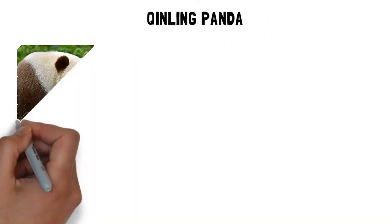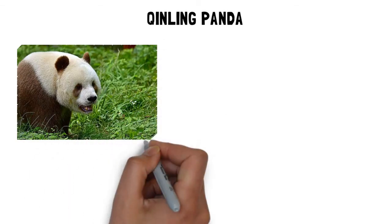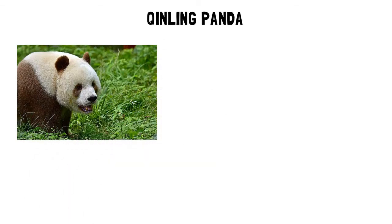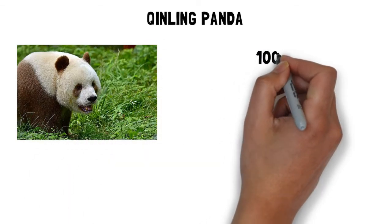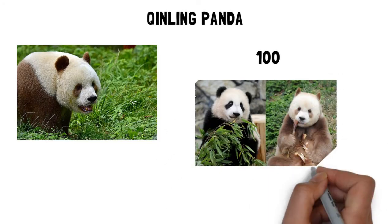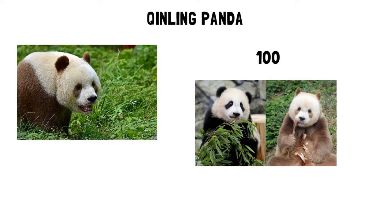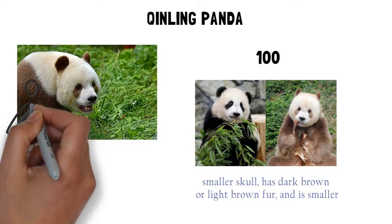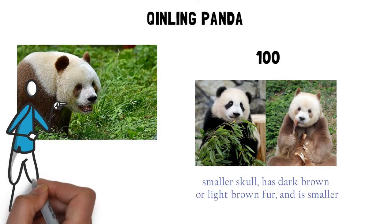Qinling panda. The Qinling panda, or brown panda, is endangered. In fact, there are only around 100 Qinling pandas still living in the wild. The Qinling is a relative of the giant panda discovered in the 1960s. It's different from the giant panda. It has a smaller skull, has dark brown or light brown fur, and is smaller. Brown pandas are very rare. This panda type lives only high up in the Qinling mountains in China.